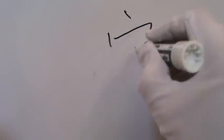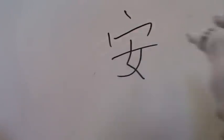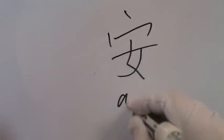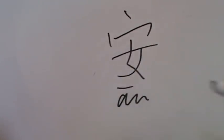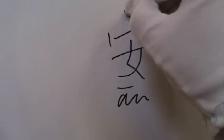Number three: 安 (An), written with 6 strokes. An means peace or safe. And the top component is the radical, this one.